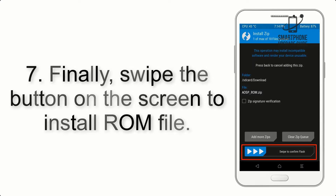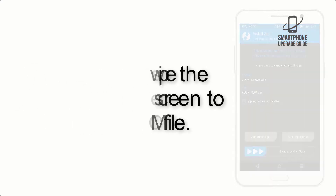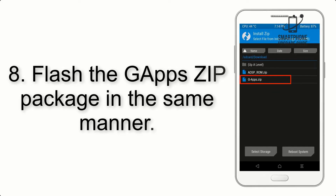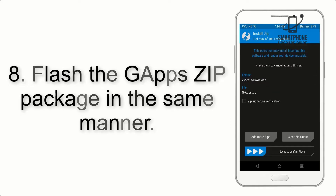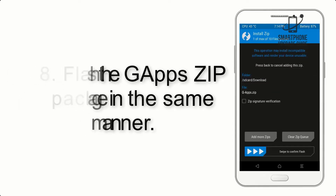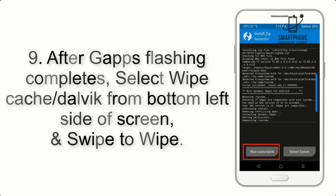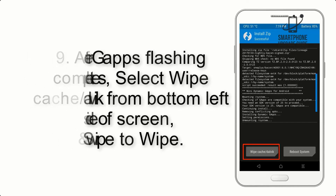Step 7: swipe the button on the screen to install the ROM file. Step 8: flash the GApps zip package in the same manner. Step 9: after GApps flashing completes, select Wipe Cache and Dalvik from the bottom left side of the screen and swipe to wipe.